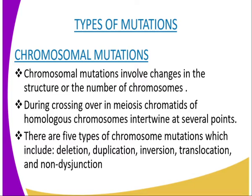However, they can be induced by certain factors of the environment. Such factors are described as mutagens and include exposure to gamma rays, UV light, and a variety of chemicals such as colchicine and mustard gas.